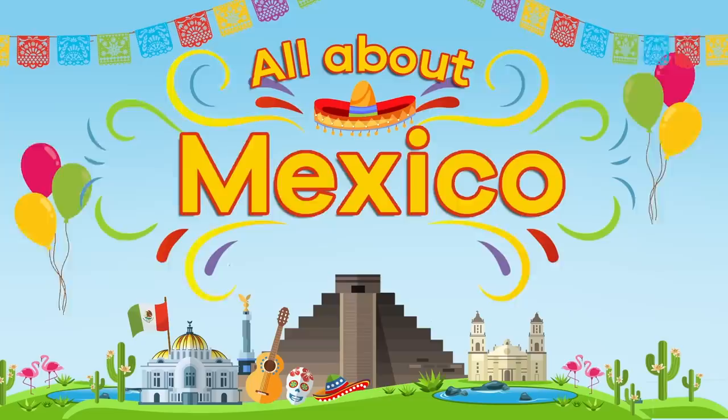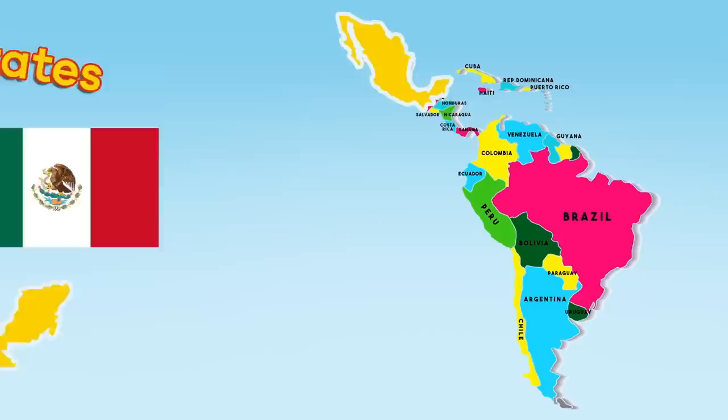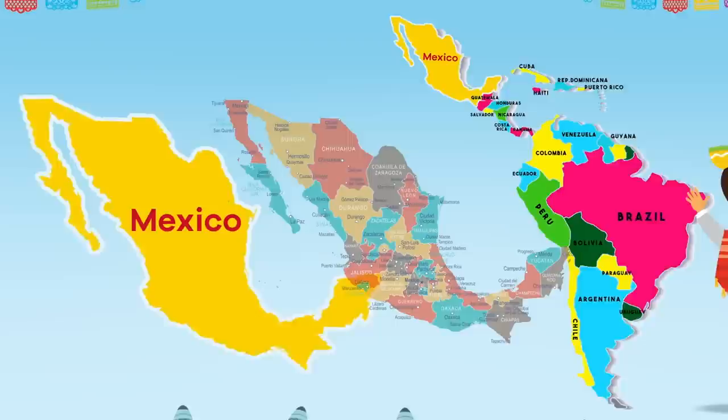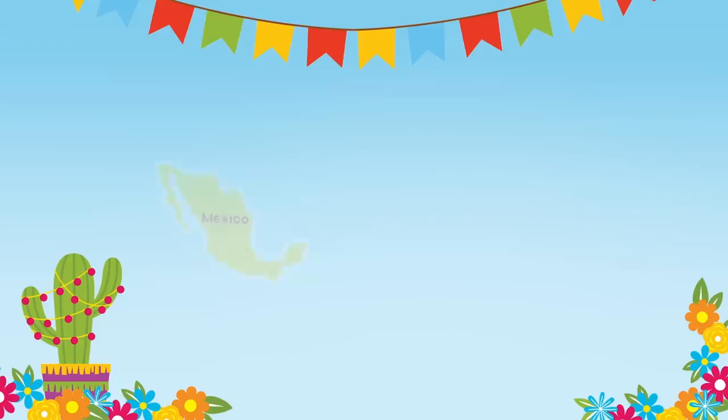All about Mexico for kids! The official name for the country of Mexico is the United Mexican States. It is the third largest country in Latin America and has the most Spanish speakers of any country in the world, divided into 31 states and one federal district. Mexico City has a rich ancient history.